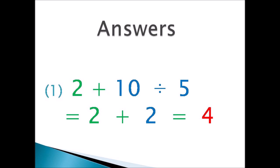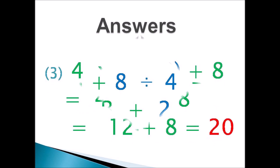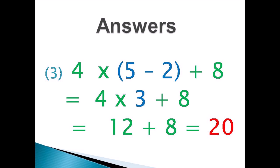Answer 1: 2 plus 10 divided by 5. Do 10 divided by 5 first — you get 2. So it's 2 plus 2. Answer is 4. You have to divide before you add. Answer 2: 3 plus 8 divided by 4 take away 1. Divide first — 8 divided by 4 is 2. So it's 3 plus 2 take away 1: 3 plus 2 is 5, take away 1 is 4. Answer 3: 4 times open bracket 5 take away 2 close bracket plus 8. Work brackets first — 5 take away 2 is 3. So 4 times 3 plus 8: 4 times 3 is 12, plus 8 is 20.